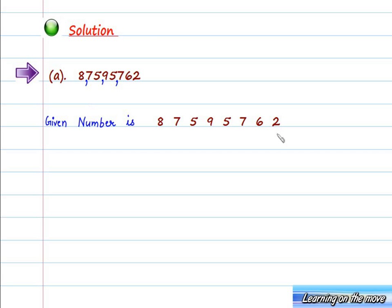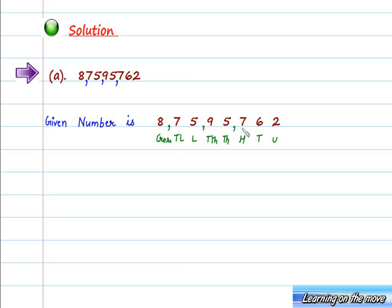Let us write the place values. First we have units place, then tens place, then hundreds, thousand, ten thousand, lakh, ten lakh, and crore. So this is our crore. We can now read this as 8 crore, 75,95,762. This is the name according to the Indian system of numeration.